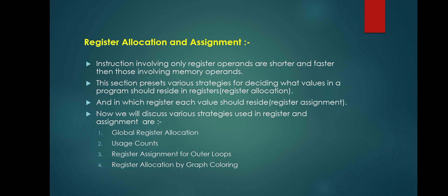Registers run faster than memory. Register allocation means deciding which variable goes to the register, and register assignment means assigning a specific register to that variable. One approach is to assign specific values in the target program to certain registers — for example, base addresses go to one group of registers and arithmetic computations to another group. The advantage of this approach is that it simplifies code generation.